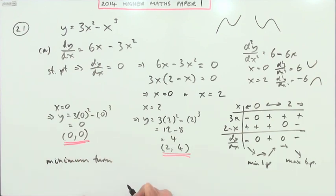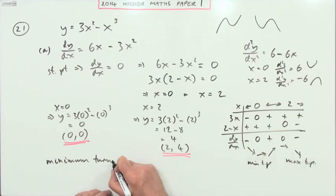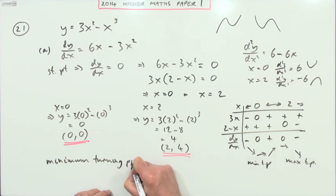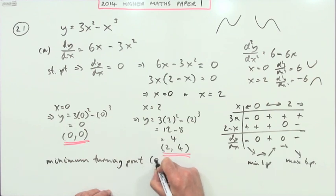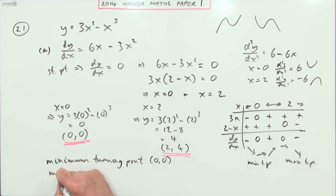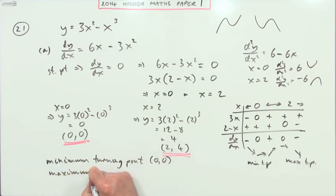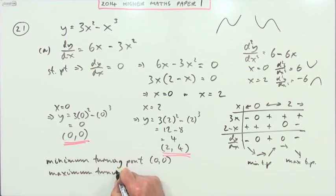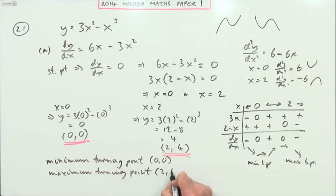To conclude: there is a minimum turning point at (0, 0) and a maximum turning point at (2, 4).